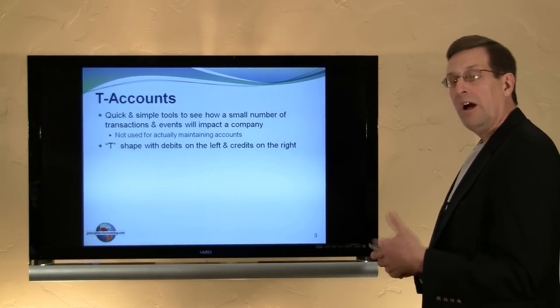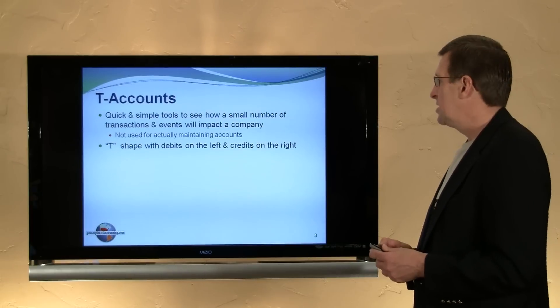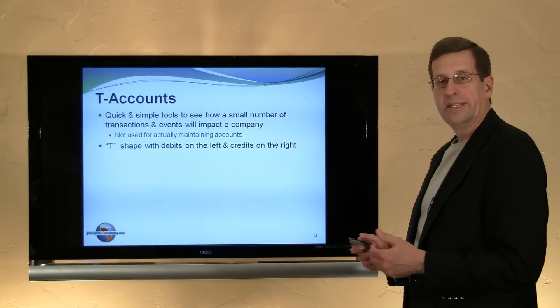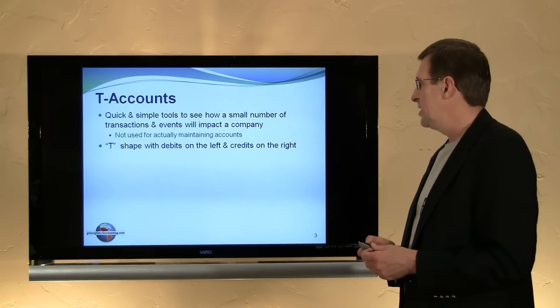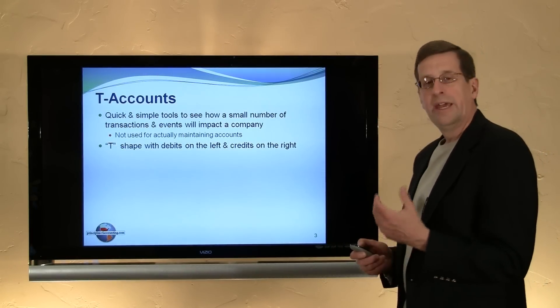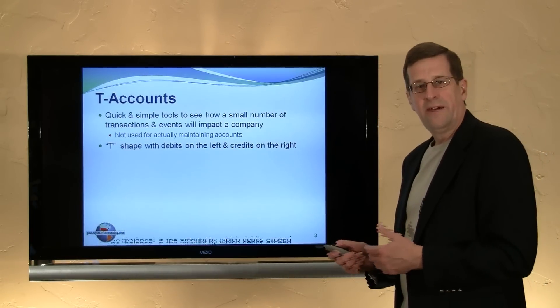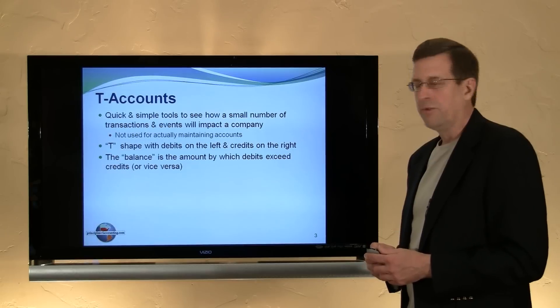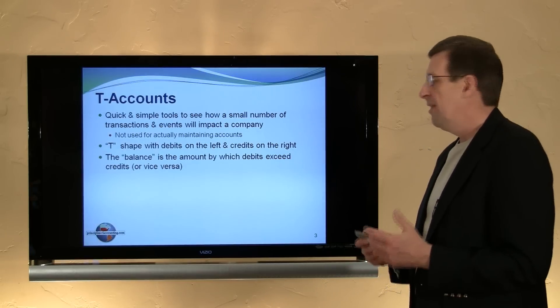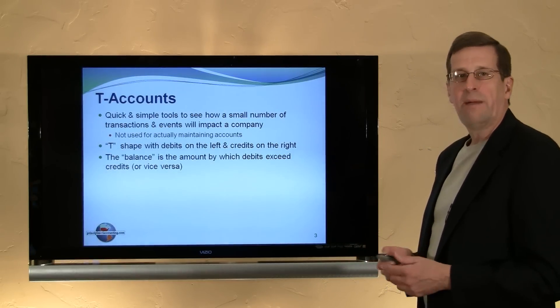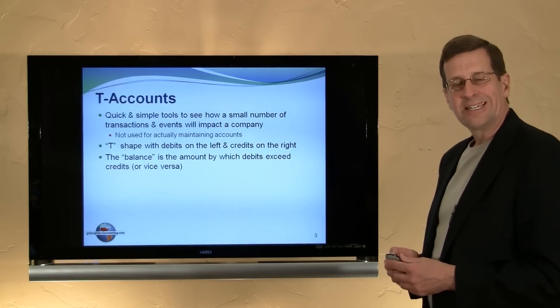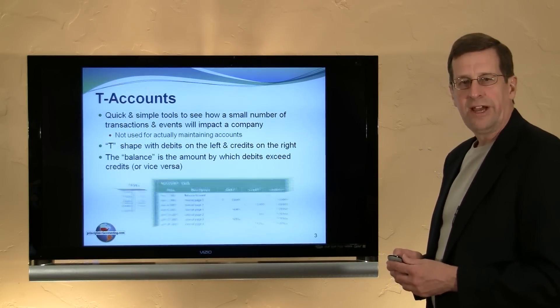It's called a T-account because of its shape — it looks like a T, as we'll see in a moment. Debits are on the left and credits are on the right. The balance is the amount by which debits exceed credits, or vice versa.